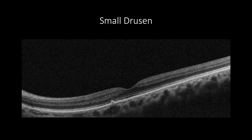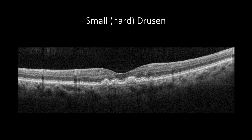Small drusen size is less than 63 microns, and when there are only a few of them, the case is not accounted for as age-related macular degeneration. Small drusen are called hard drusen. They usually appear as a small elevation of the RPE with hyperreflective content, without any disruption of the ellipsoid zone or external limiting membrane. However, increased hyperreflectivity adjacent to the drusen is an alteration of the Henle fiber layer and should not be mistaken with intraretinal pigmentation.